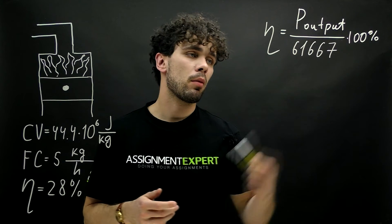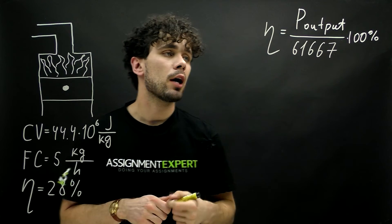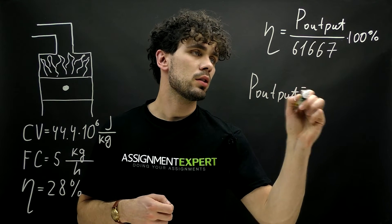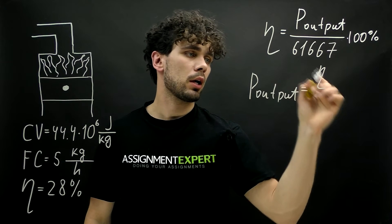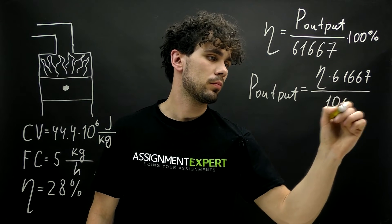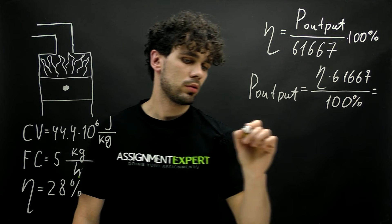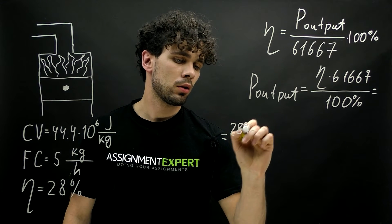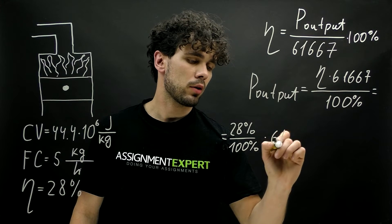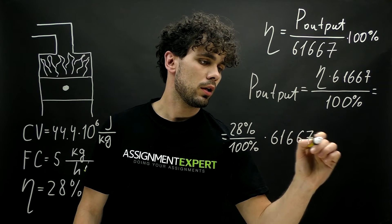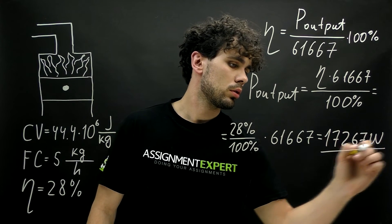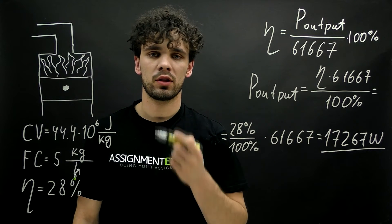Alright, so we found the power input and I placed it into our formula for efficiency. Now we can find the power output. It is equal to the efficiency multiplied by the power input and divided by 100%. So, we have 28% over 100% times 61,667. And this gives us 17,267 watts. So, here we found the power output of this internal combustion engine.